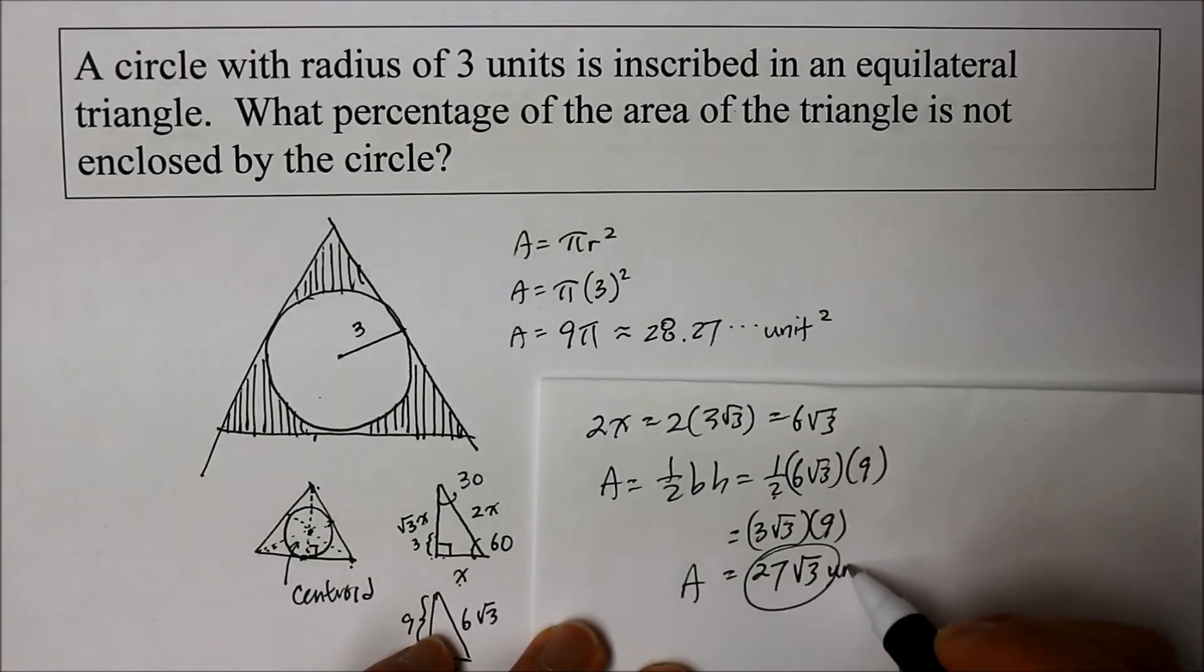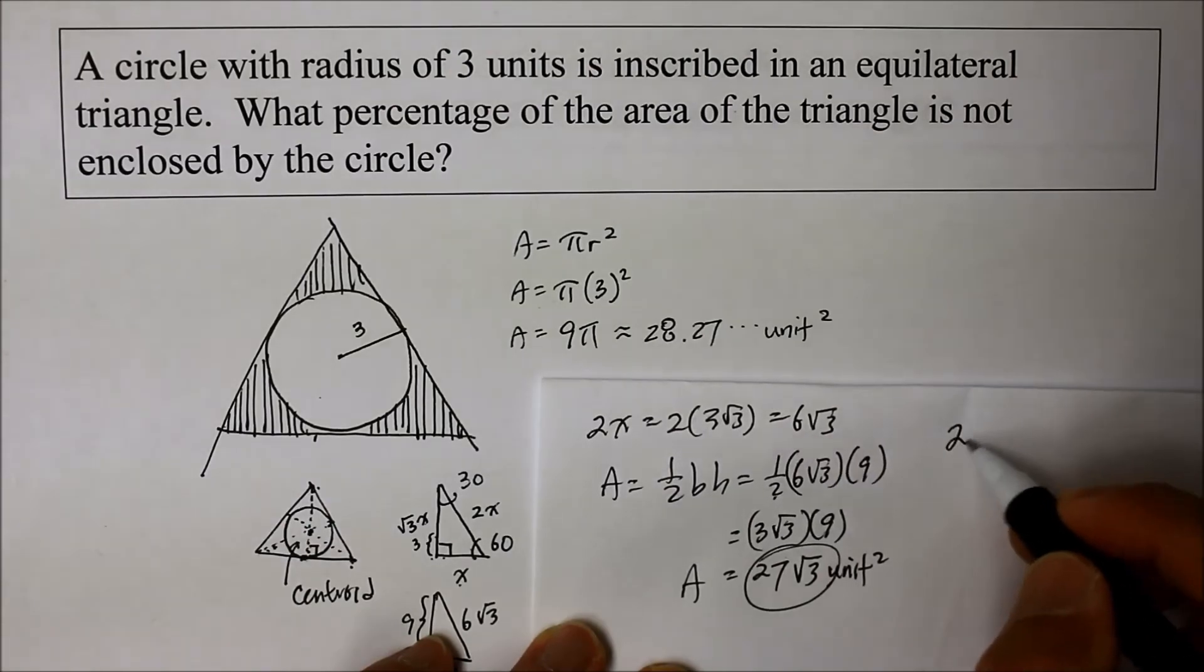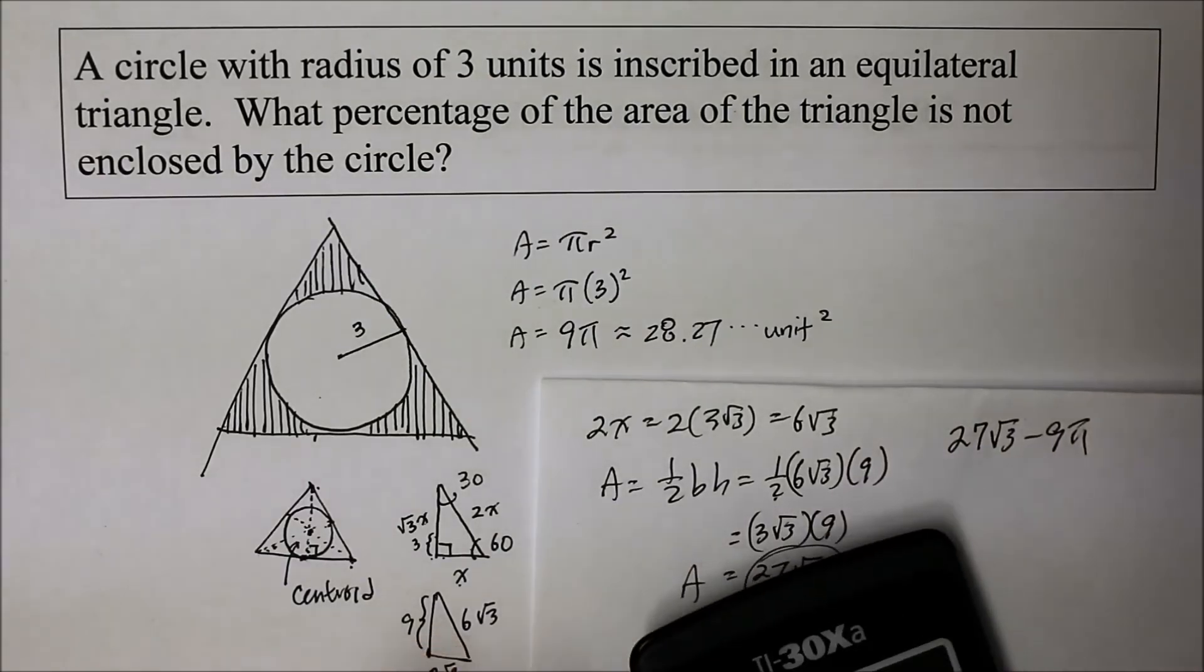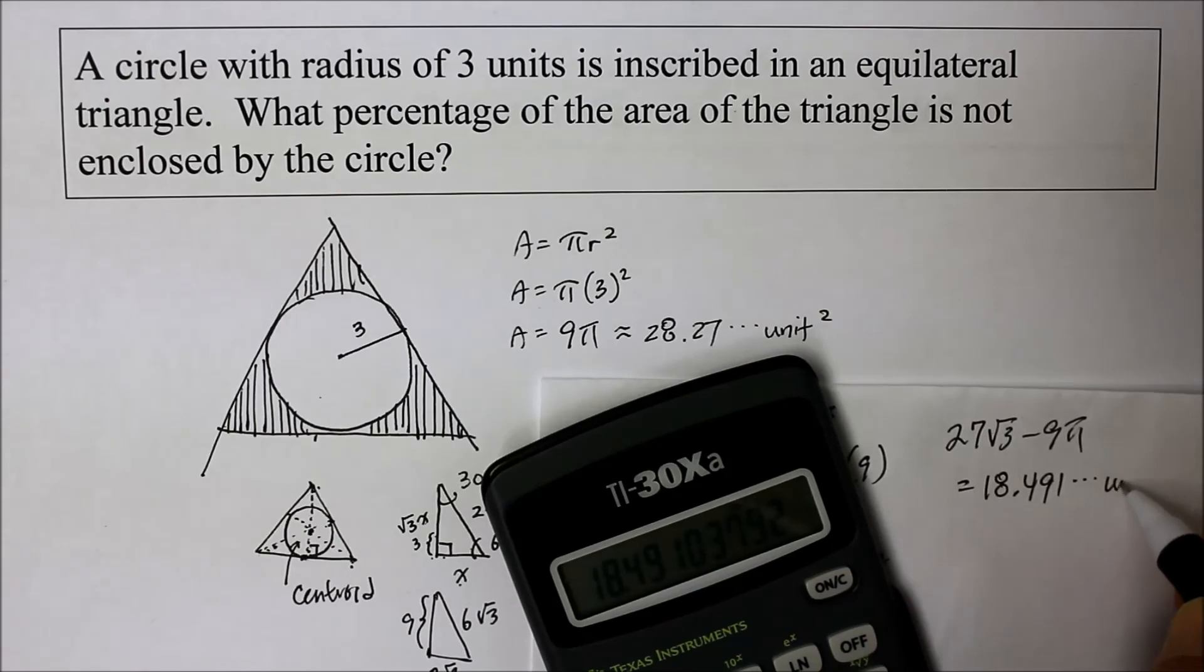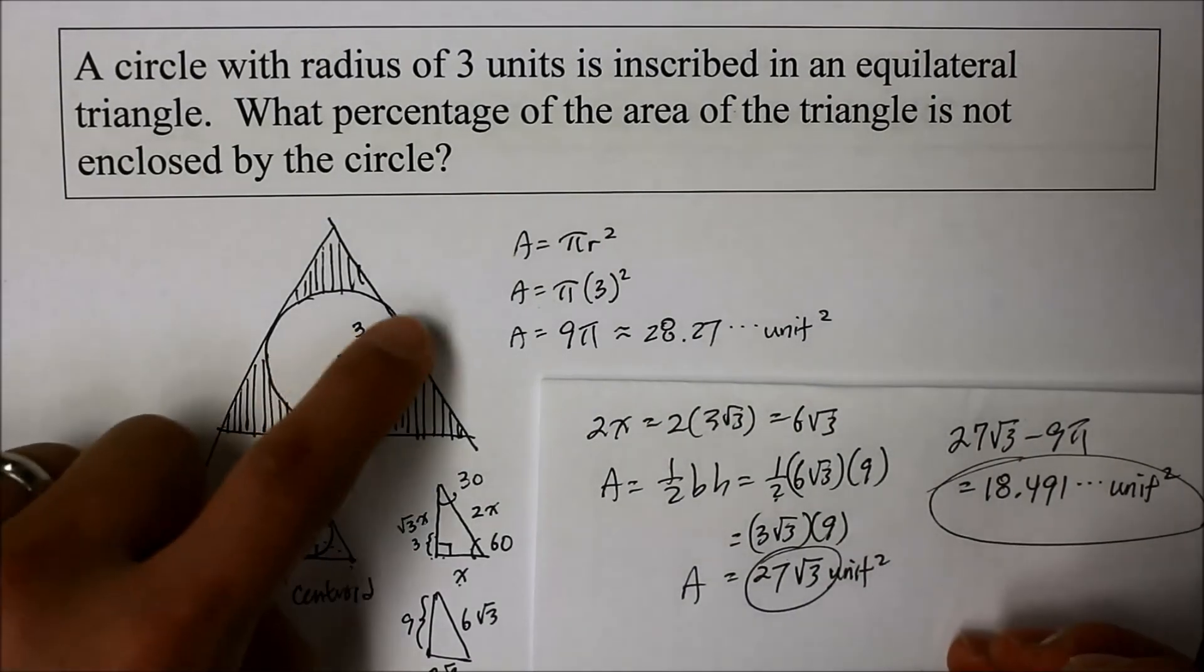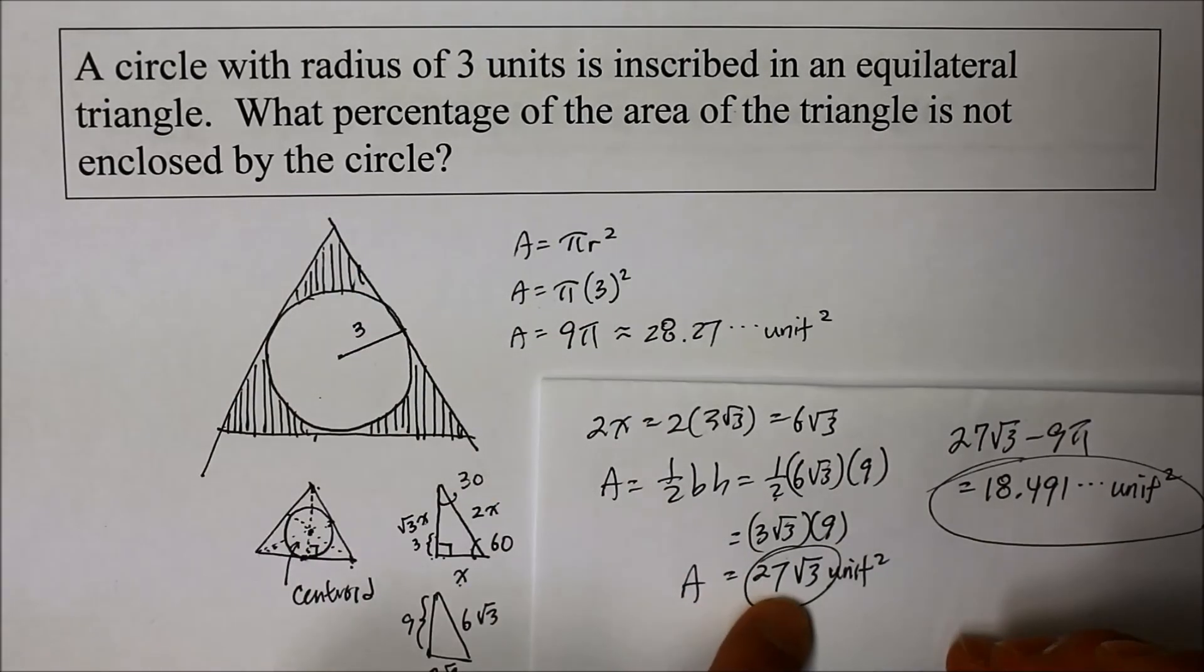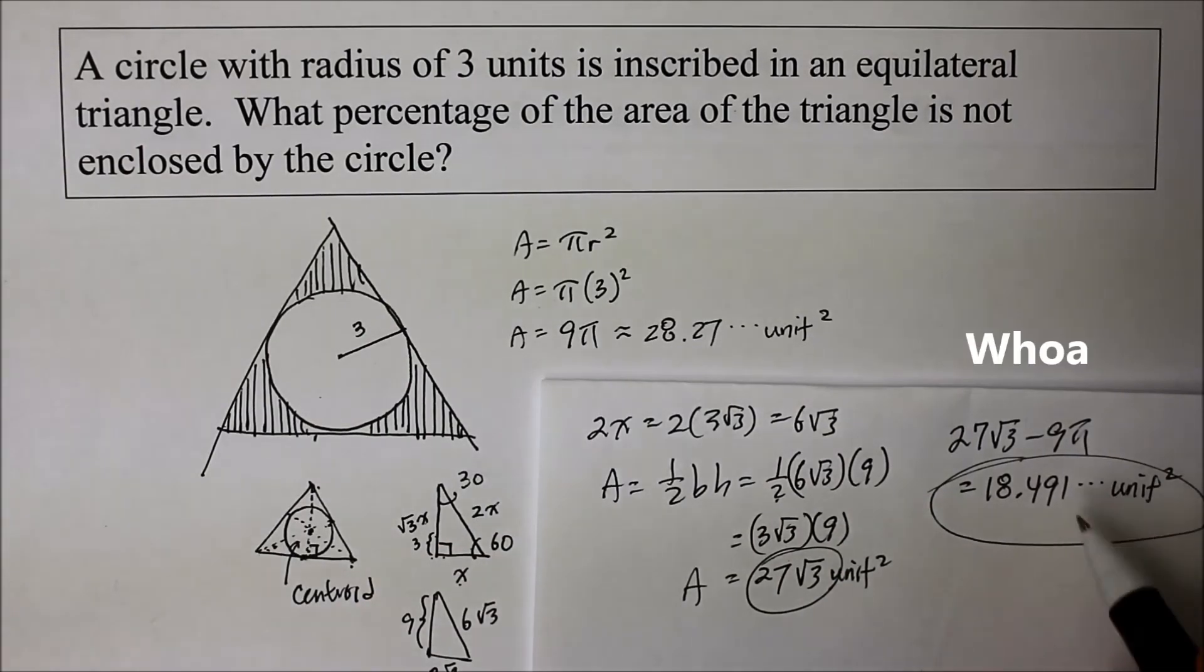So what do you do with the area of a triangle with the area of the circle? Is you subtract. So twenty-seven square root of three minus nine pi. You want to use a calculator because I want to carry all the decimal places. It gives me eighteen point four nine one, something like that, unit squared. There's my area left over when I cut, when I cut the circle, which is twenty-eight point two seven away from this triangle, which is twenty-seven times square root of three. And I get eighteen point four nine one area. And whoa, that's just a leftover.